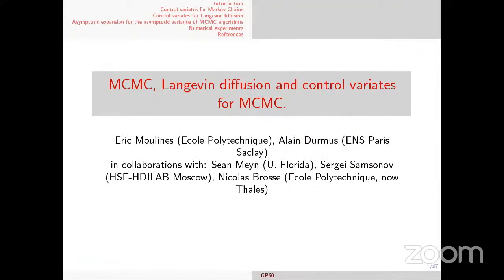I changed a little bit what I planned, because I did not have really time to make the slides. So I will present something I did two years ago on MCMC and Langevin diffusion — it's connected somehow with a talk by Jacques — and also control variates for MCMC. It's a joint work with Alain Durmus, who is now working at ENS Paris-Saclay, a former PhD student of mine, and several co-authors including Sean Meyn. The work started a long time ago with Sean Meyn, not exactly for doing variance reduction, but for stochastic controls to solve stochastic control problems — basically the same problem.